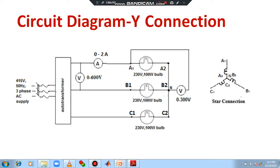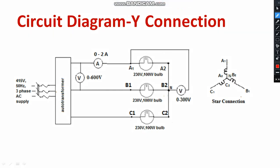First of all we will see the circuit diagram of star connection. In case of star connection, the similar ends of the coils are connected to a neutral point. A1A2, B1B2, C1C2 are the coils. We are using 230 volt, 100 watt bulbs here. The line current and phase current will be equal, so the ammeter gives both line current and phase current. The 0 to 600 volt voltmeter gives the line voltage, and the voltage between one line and neutral point is called V phase. You are supposed to measure the line voltage and phase voltage separately to identify the relation.